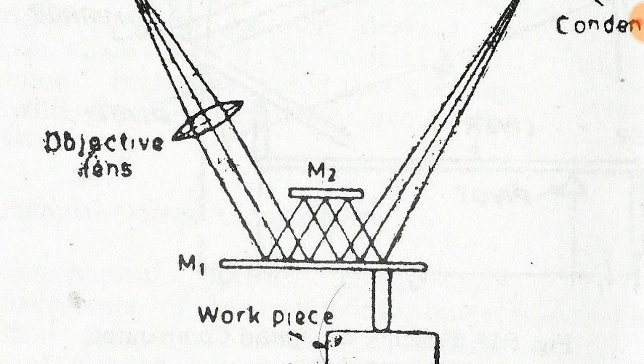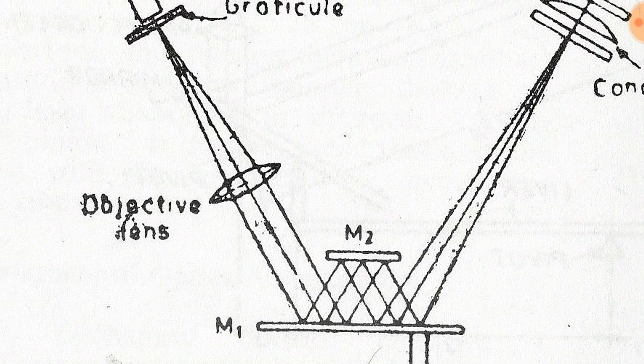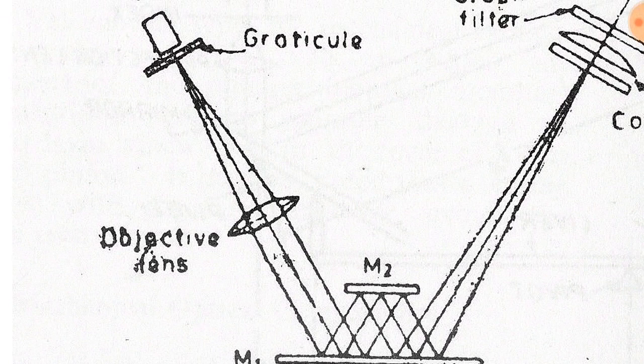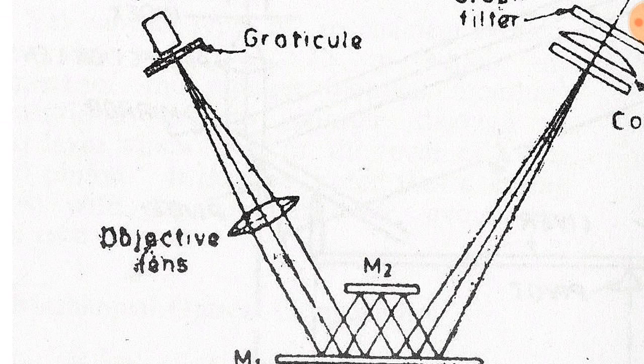The second objective lens brings the reflected beam of light from the first mirror to focus at a transparent graticule containing a precise scale which is viewed by the eyepiece.